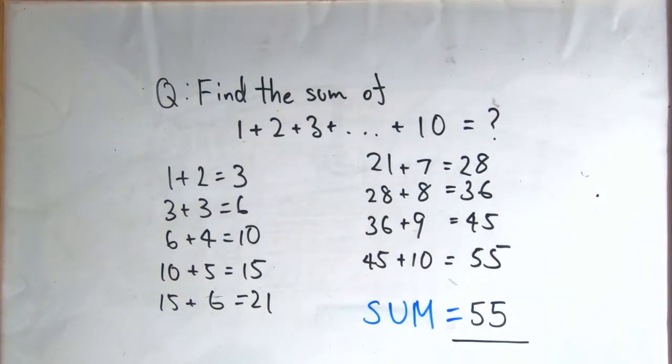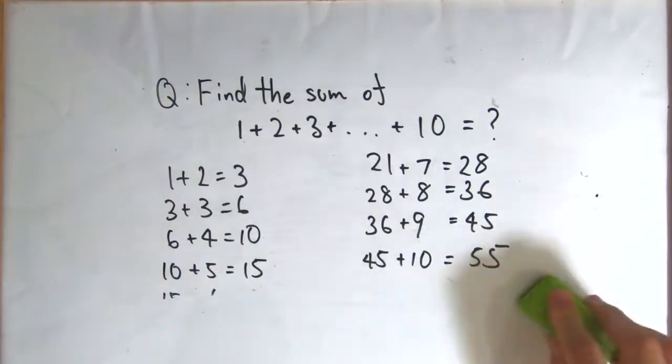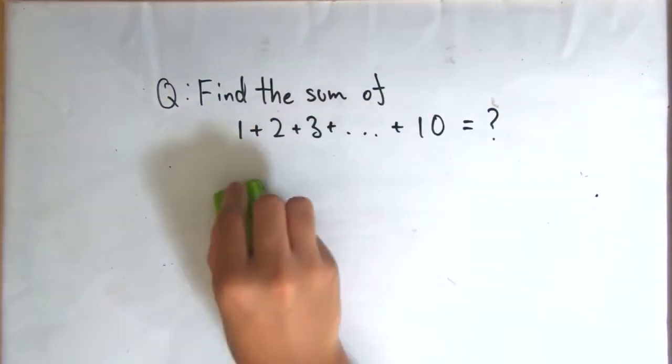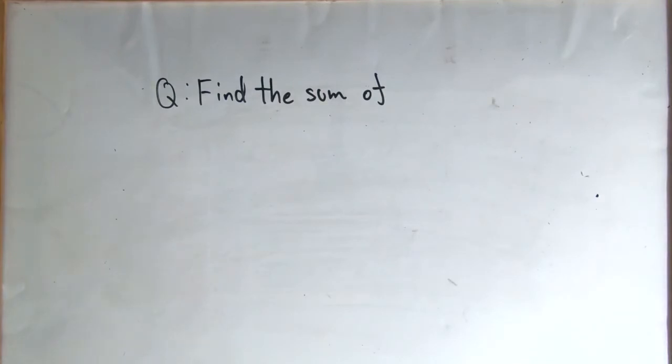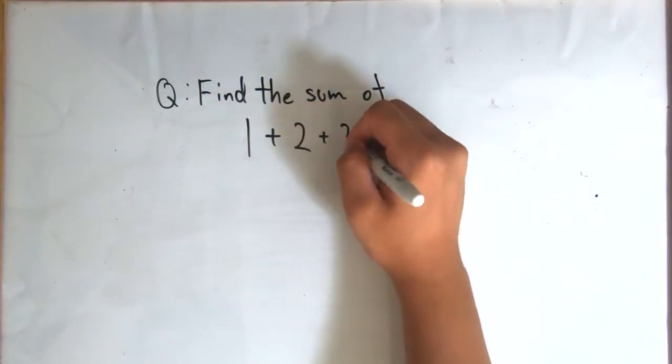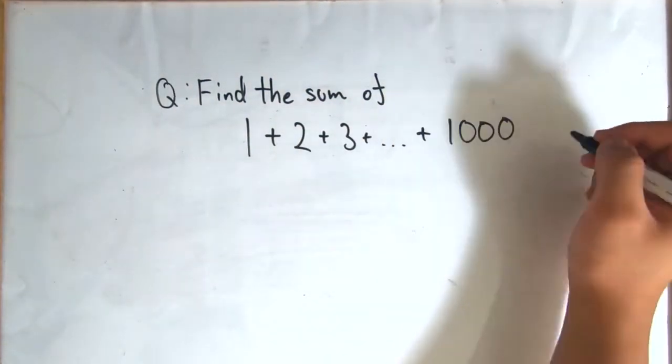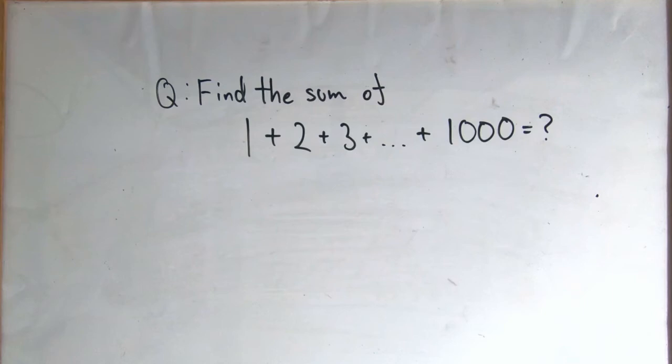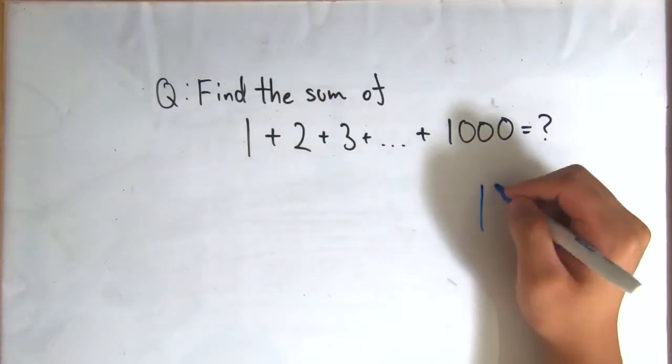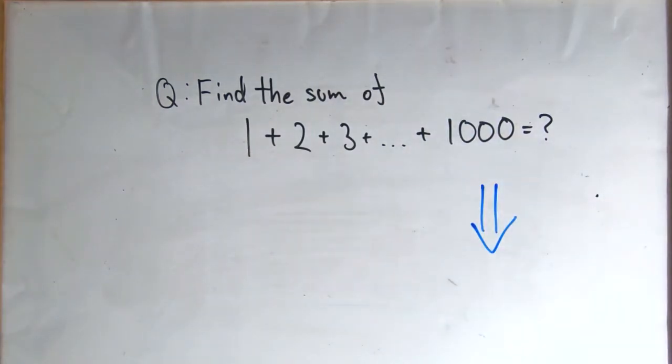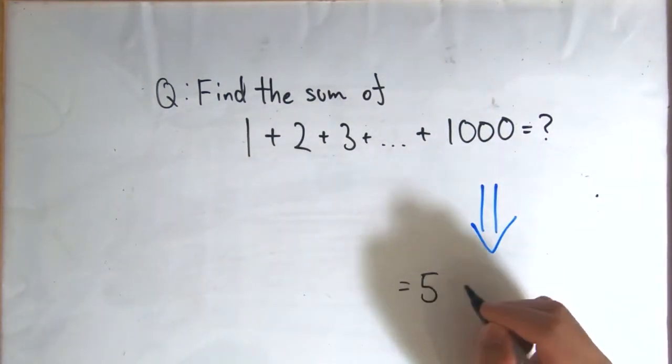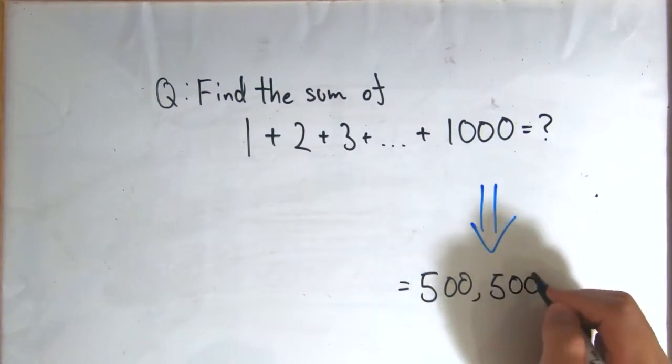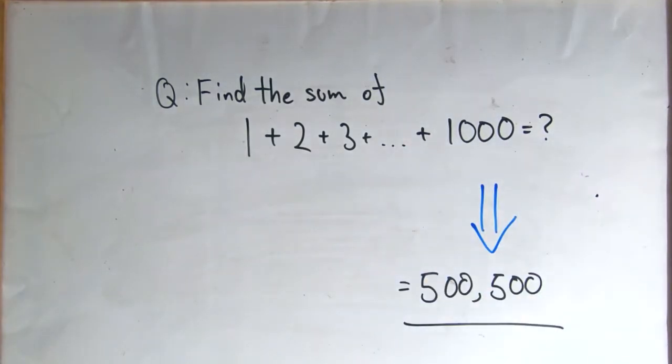But this approach is tedious, especially if we had to add many more numbers. Imagine another question like the following: Find the sum of 1 plus 2 plus 3 plus on and on until plus 1000. Again, we can indeed try to add the terms one by one, which I won't do because it's just too much work. But if you have managed to get to the end without making a mistake, you will find out that the sum of this is equal to 500,500.